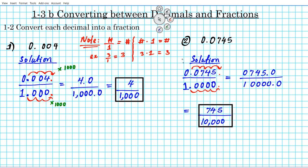Let's talk about the math: moving the decimal point four places to the right in both the numerator and denominator is mathematically equivalent to multiplying both by 10,000. Multiplying numerator and denominator by the same value means multiplying by one, which does not change the number.